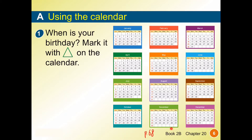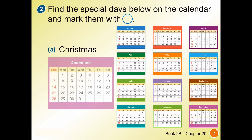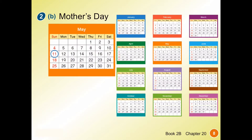We haven't done this in February. Part A uses the calendar. Question one: when is your birthday? Mark it with a triangle on the calendar — it'll be different for all of you. Question two: find the special dates below on the calendar and mark them with a circle. Christmas is on December 25th, so it must be December 25th for every year.